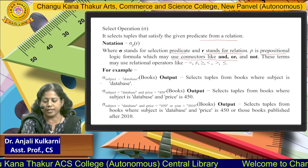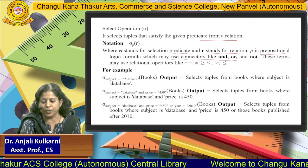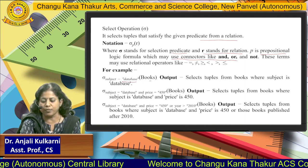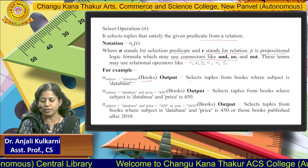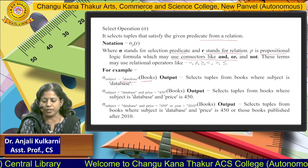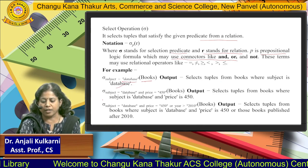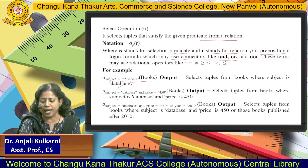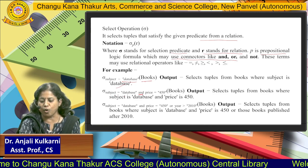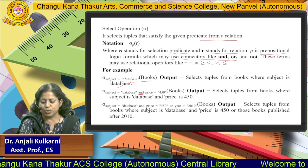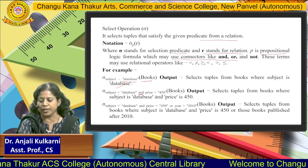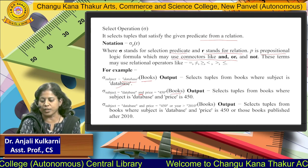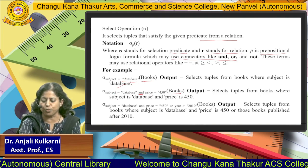For example, we can select where subject is equal to 'Database' from the relation Books. The output selects the tuples from Books where subject is 'Database'. We can also combine conditions — for instance, subject equal to 'Database' AND price equal to 450 — to select books matching both criteria.